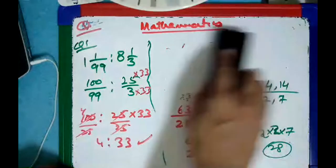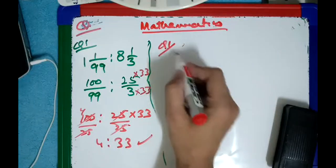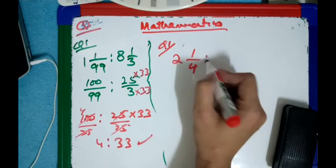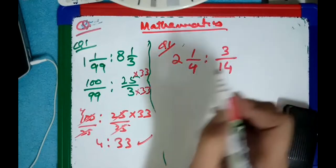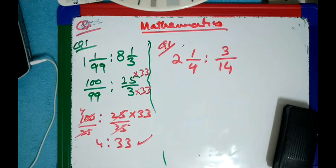Now one more thing. I hope you will do this one. I will give you a little easier one now: 2 whole 1 over 4, ratio 3 over 14. Try this.